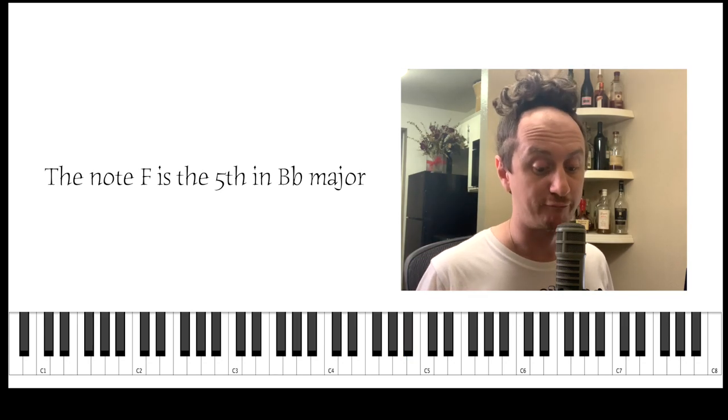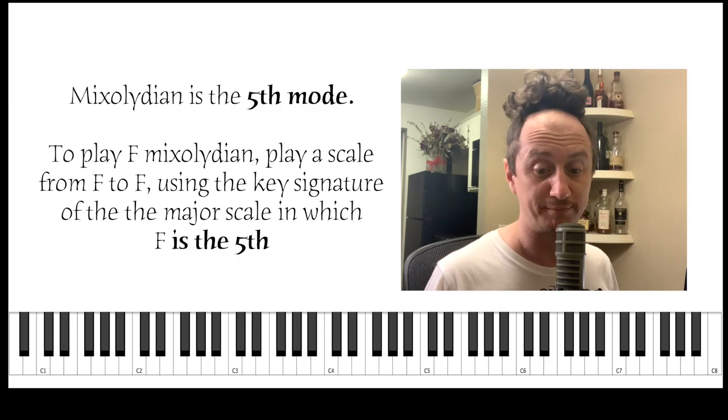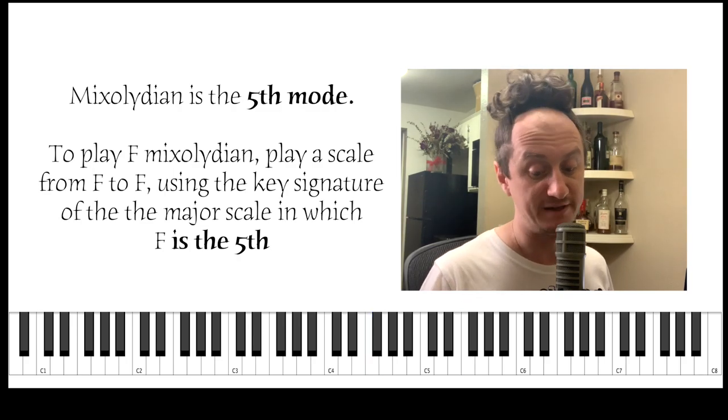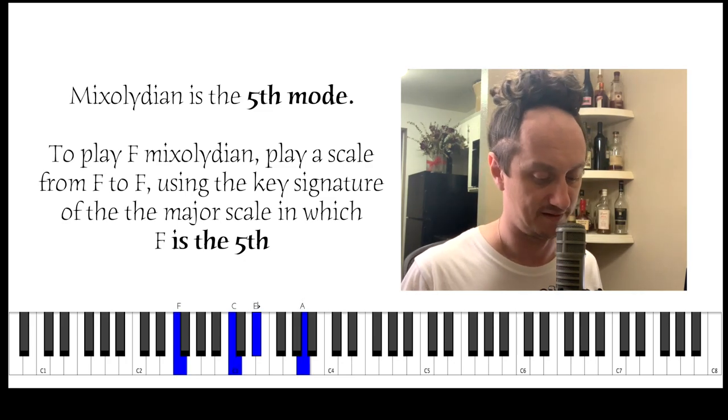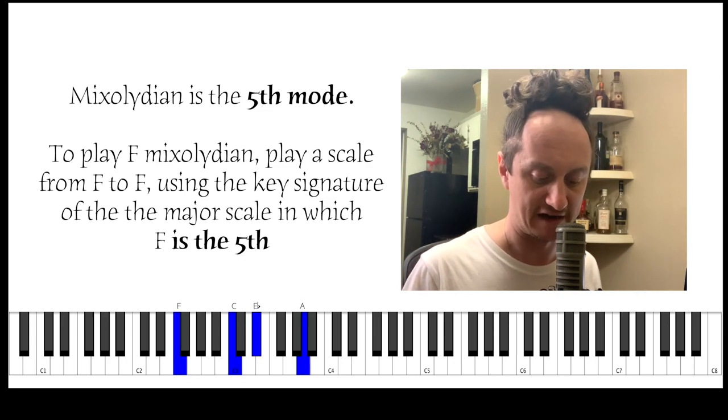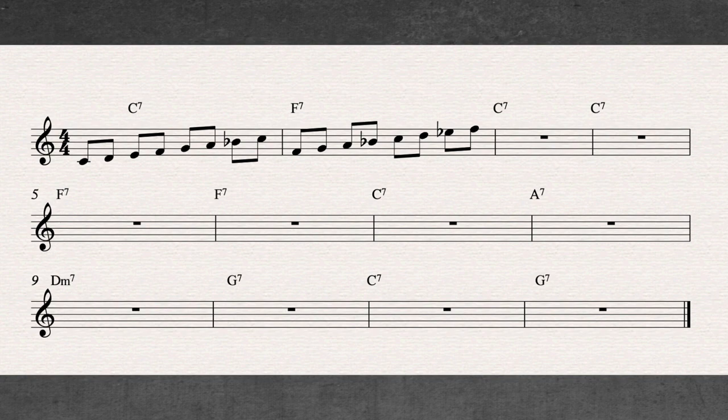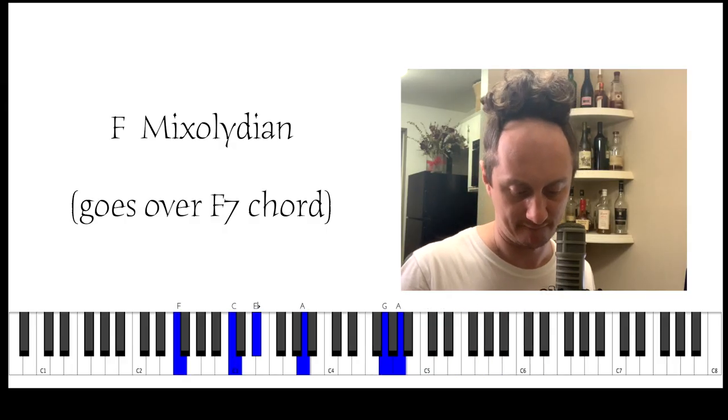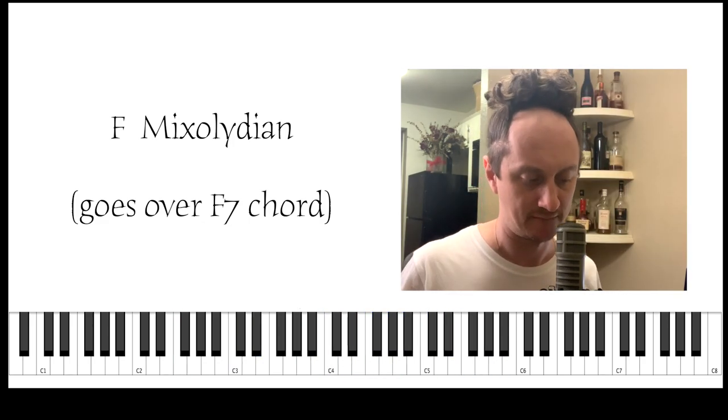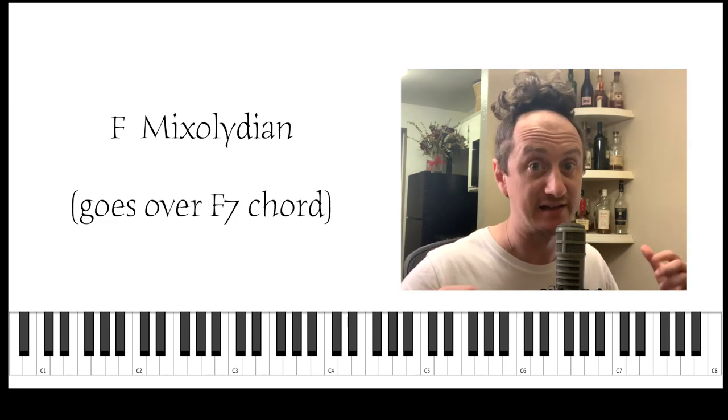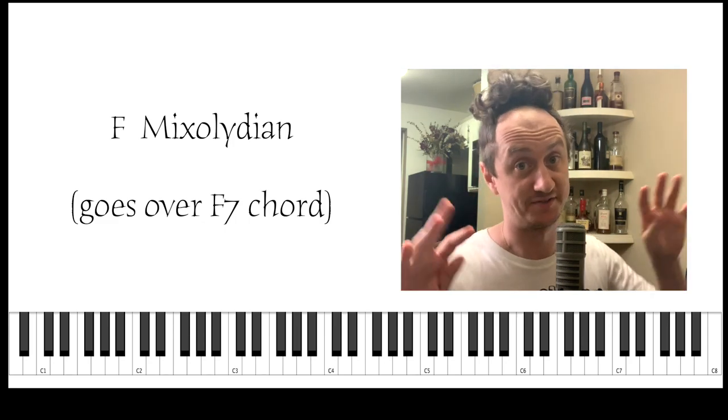So if we want F Mixolydian, we're going to play from F to F using a Bb and an Eb. Here's the F chord and here's F Mixolydian: Bb, Eb. That's the scale. See? Again, we found the scale and now we're free to find all these cool things inside it.